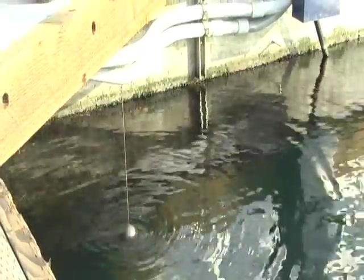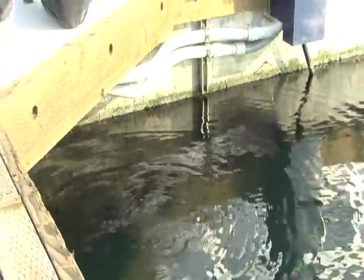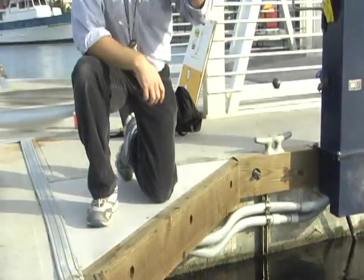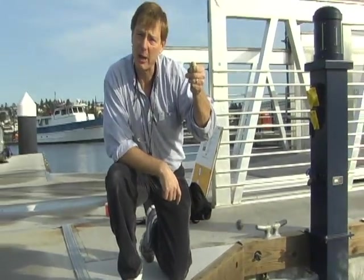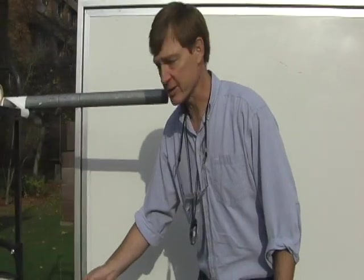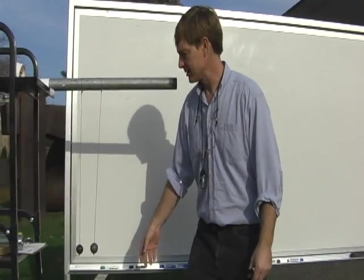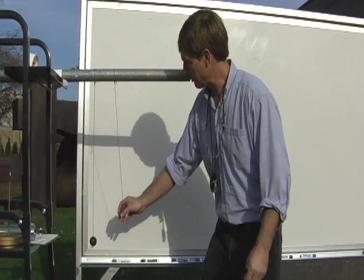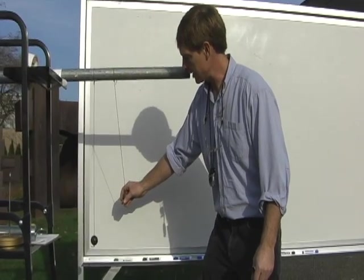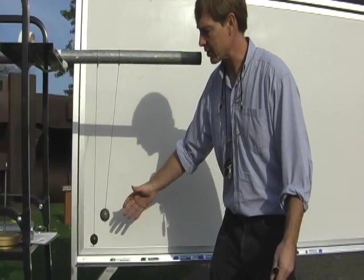There are other ways to do it. I don't have to just bob this. I can swing it as a pendulum. Here's one way to show simple harmonic motion with a pendulum. I can take the pendulum, and as I swing it, I put potential energy into it. And as I let it go, it converts it into kinetic energy, and it goes back and forth.